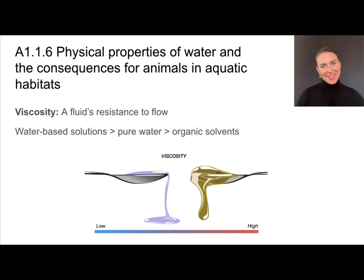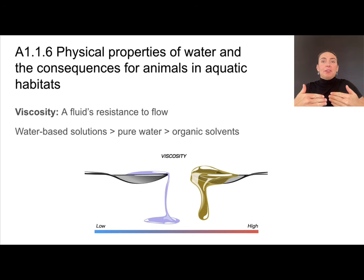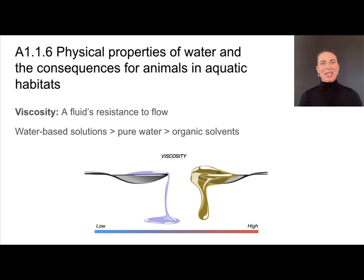Now let's talk about viscosity — water's resistance to flow. Think about a fish swimming through water: we need some resistance from the water when the fin is moving in order for the fin to help propel the fish forward. There are also implications for water being used as a transport medium — the more solutes that are dissolved in the water, the higher the viscosity. There are limits to how much we can dissolve into things like blood before it becomes very resistant to flow.